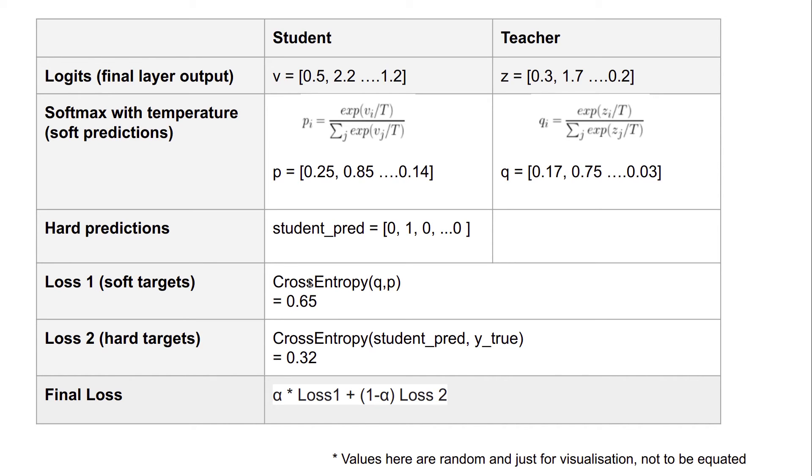So loss 1 is based on soft targets, and that is basically the cross-entropy between Q and P. These are called soft targets because they are coming through the temperature functions. You take the cross-entropy between these two. So it's almost as if Q is your true probabilities and P is your predictions. So cross-entropy is computed like that. Then you have the loss coming from the hard targets, which is the cross-entropy between the student predictions, which are the hard predictions, and Y true. Y true is the actual one-hot encoded class labels. So we take the hard targets and get a cross-entropy over there. And then we take the final loss as a weighted average of loss 1 and loss 2. So alpha is some weight here. And we take the weighted average of alpha times loss 1 and then 1 minus alpha times loss 2.